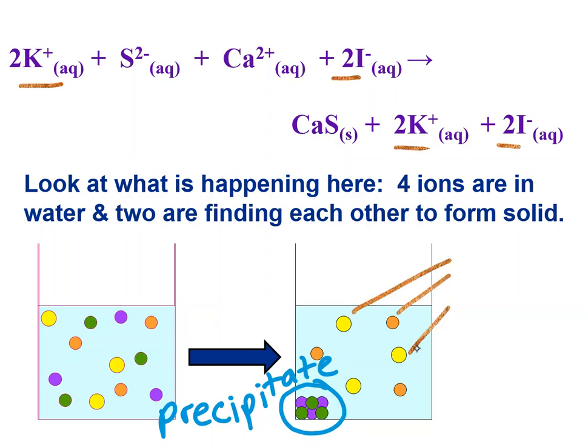So these ions are spectators—spectator ions. So they're not reacting. They're just sitting there and watching the reaction happen. The reaction is the calcium and sulfide coming together to make this solid.